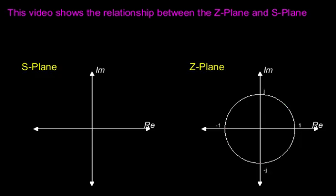The Z domain is said to be the discrete version of the Laplace or S domain. This video attempts to show visually the relationship between the two domains in the context of systems impulse response analysis.